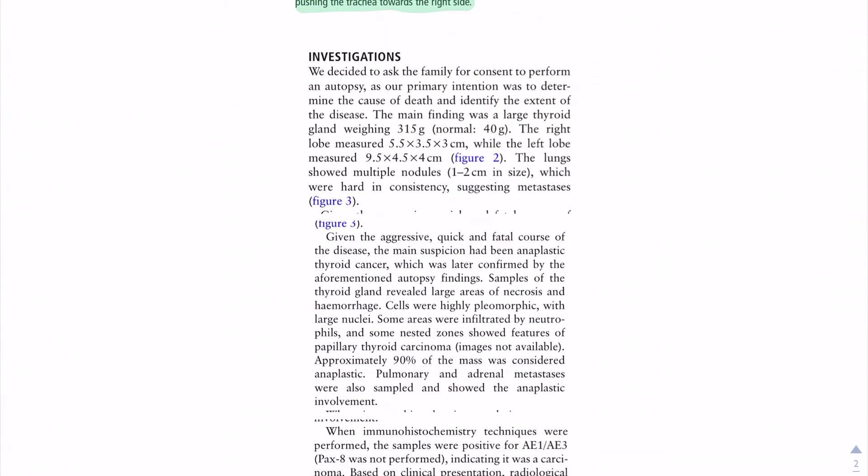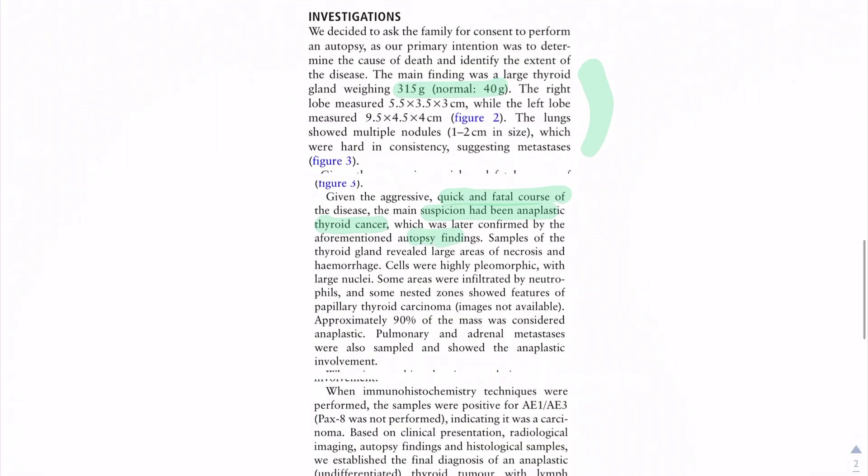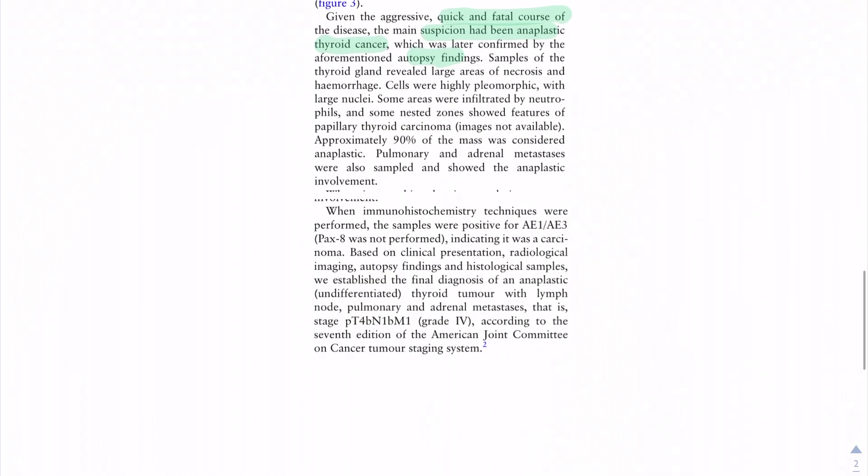So their investigation was basically saying let's do an autopsy, they asked the family. They did find that the thyroid was 315 grams compared to normal, which was 40. And you can see this is the measurements. So given the aggressive and quick fatal outcome of this disease, the suspicion was very likely for anaplastic thyroid cancer, which was later confirmed, obviously, with the autopsy findings, as well as immunohistochemistry techniques.